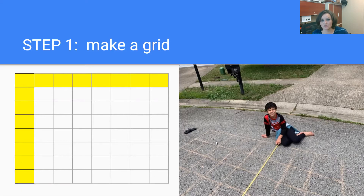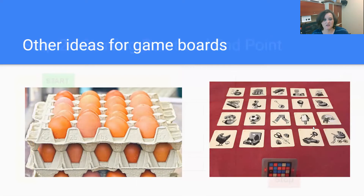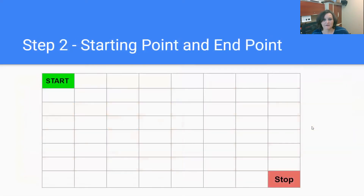We decided to use chalk for ours. You can also use other things to make your game board, such as egg cartons or playing cards — you could flip those over and make a grid out of your cards. Or you can just use paper.